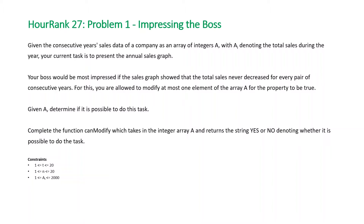For the property to be true, given A, determine if it is possible to do this task. Complete the function canModify which takes in the integer array A and returns the string 'yes' or 'no' denoting whether it is possible to do the task. The constraints are: T, the number of test cases, is between 1 and 20; the number of elements in the array is between 1 and 20; and the values of each element are between 1 and 2000.